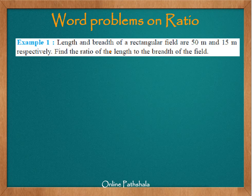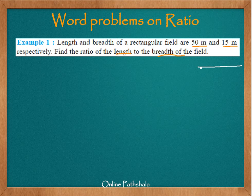Let us look at a few examples involving the use of ratio. The first example: the length and breadth of a rectangular field are 50 meters and 15 meters respectively. Find the ratio of the length to the breadth of the field. Let us quickly make a rectangle — we have a rectangle here, so the length of this rectangle is 50 meters and the breadth is 15.